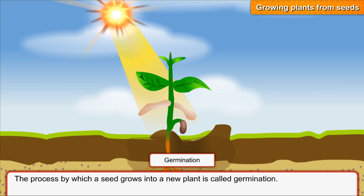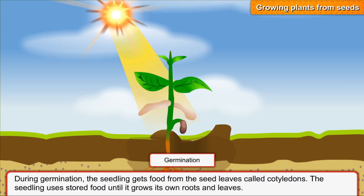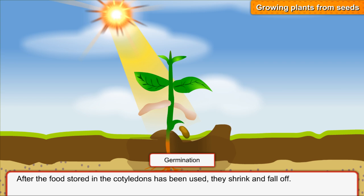The process by which a seed grows into a new plant is called germination. During germination, the seedling gets food from the seed leaves called cotyledons. The seedling uses stored food until it grows its own roots and leaves. After the food stored in the cotyledons has been used, they shrink and fall off.